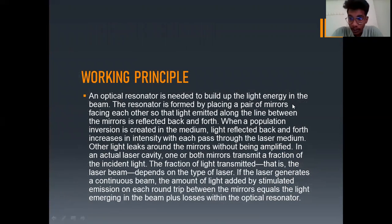What is the working principle of optical resonator? An optical resonator is needed to build up the light energy in the beam. The resonator is formed by placing a pair of mirrors facing each other so that light emitted along the line between the mirrors is reflected back and forth. When a population inversion is formed, the vibration of electrons from the lower energy level to higher energy level occurs. In the excited medium, light reflected back and forth increases in intensity with each pass through the laser medium.